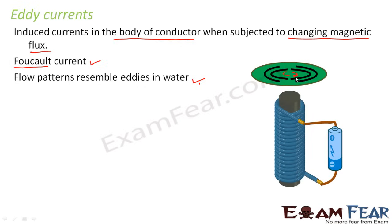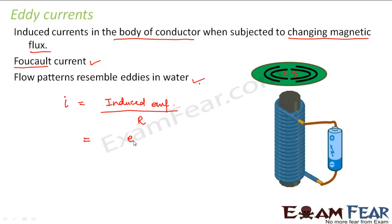Eddy currents have many disadvantages, but there are also certain advantages, which is why they appear in many practical phenomena around us. The magnitude of eddy current is given by induced EMF divided by the resistance of the conductor: I = E/R. Since induced EMF is E = −dΦ/dt, the magnitude of eddy current is given by (dΦ/dt) / R.